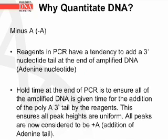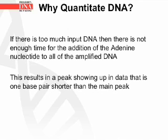Now let's talk about minus A. Reagents in PCR have a tendency to add a 3' nucleotide tail at the end of amplified DNA — this is the adenine nucleotide that is added on. The hold time at the end of the PCR is to ensure that all of the amplified DNA is given time for the addition of the polyA 3' tail by the reagents. This ensures that all peak heights are uniform. All peak heights are now considered to be plus A because of the addition of the adenine tail. If there is too much input DNA, then there is not enough time for the addition of the adenine nucleotide to all of the amplified DNA. This may result in a peak showing up in the data that is one base pair shorter than the main peak.